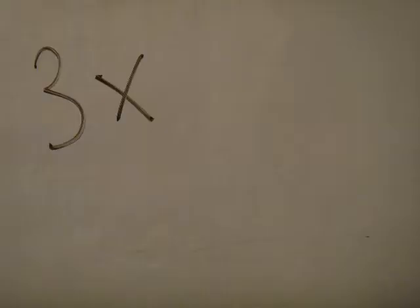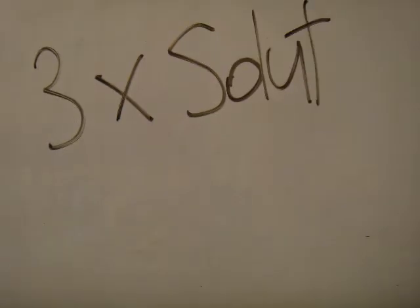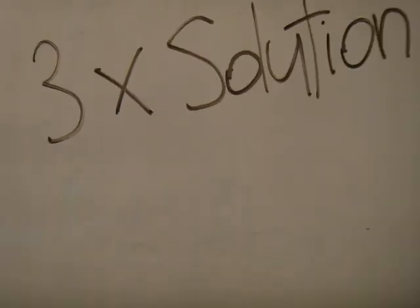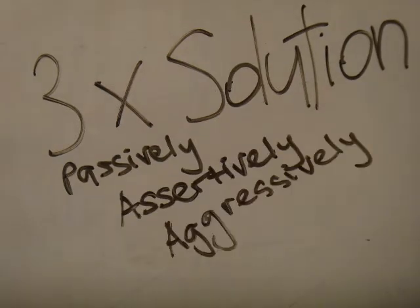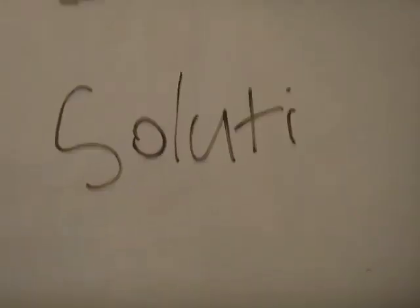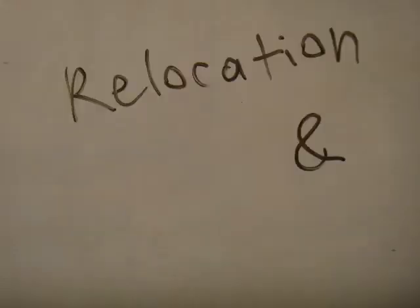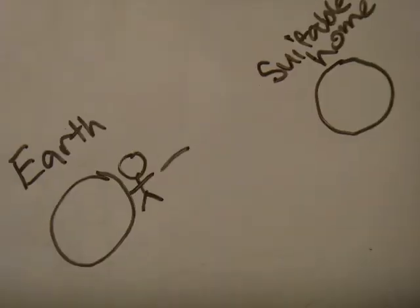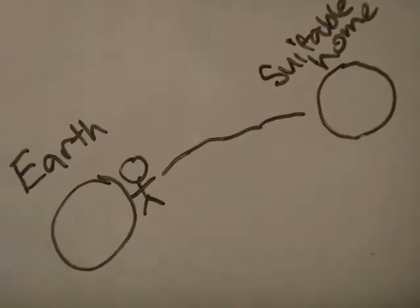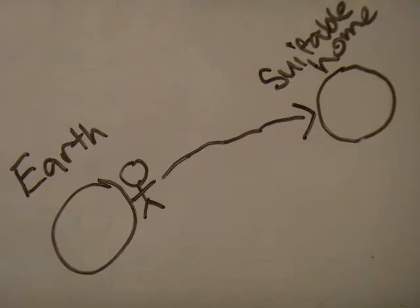There are 3 obvious ways to solve overpopulation. Just as with communication styles, we can do it passively, assertively, or aggressively. Solution number 1: Relocation and exploration. This is the passive one of the three solutions. The solution is to find other suitable places for humans to live and relocate there, gaining more resources and space.